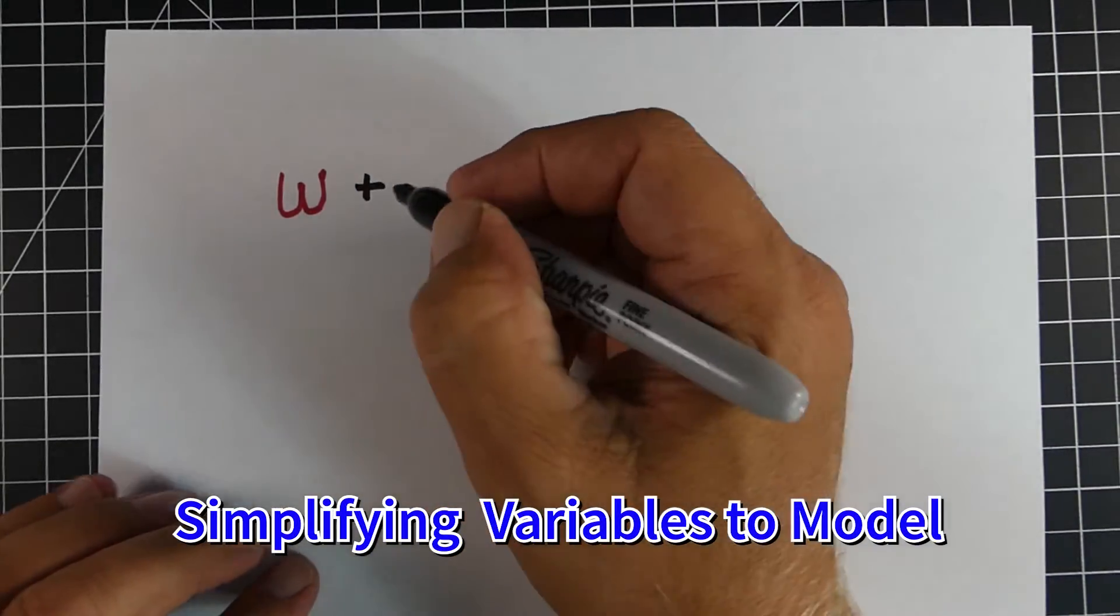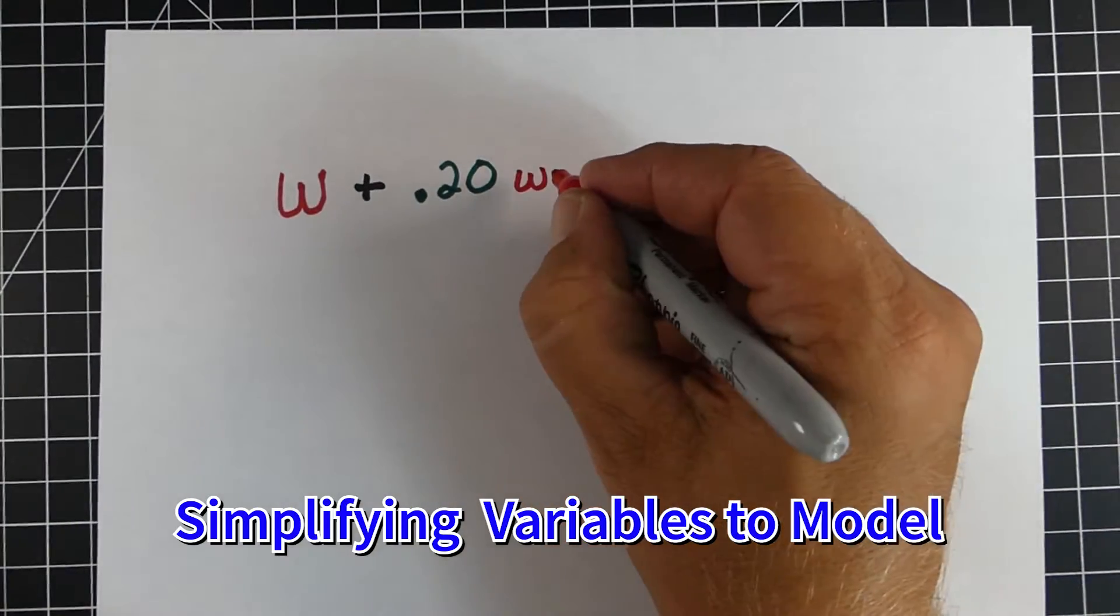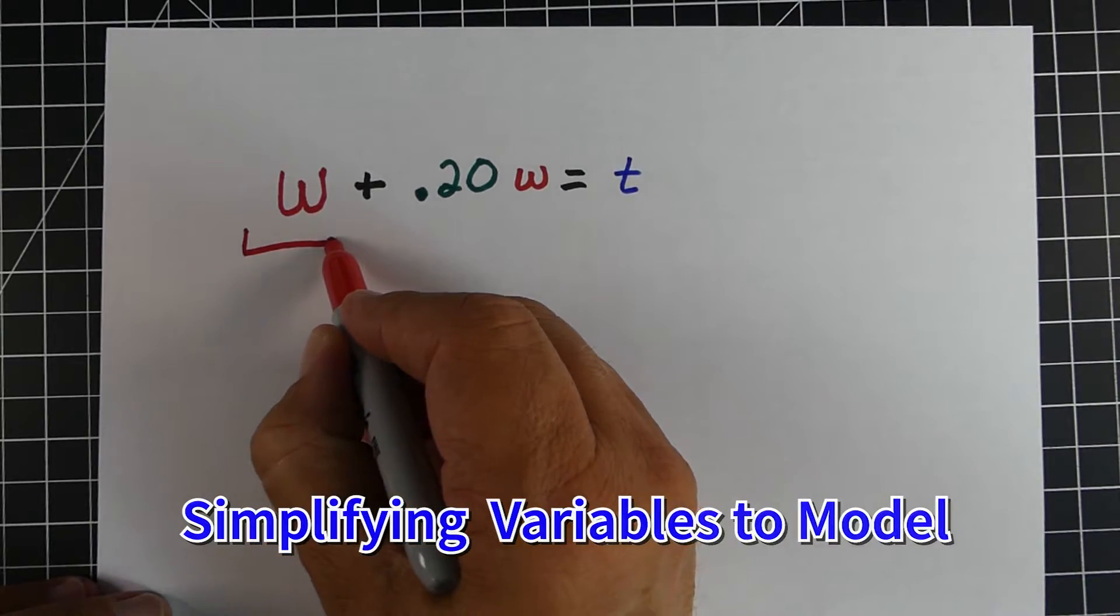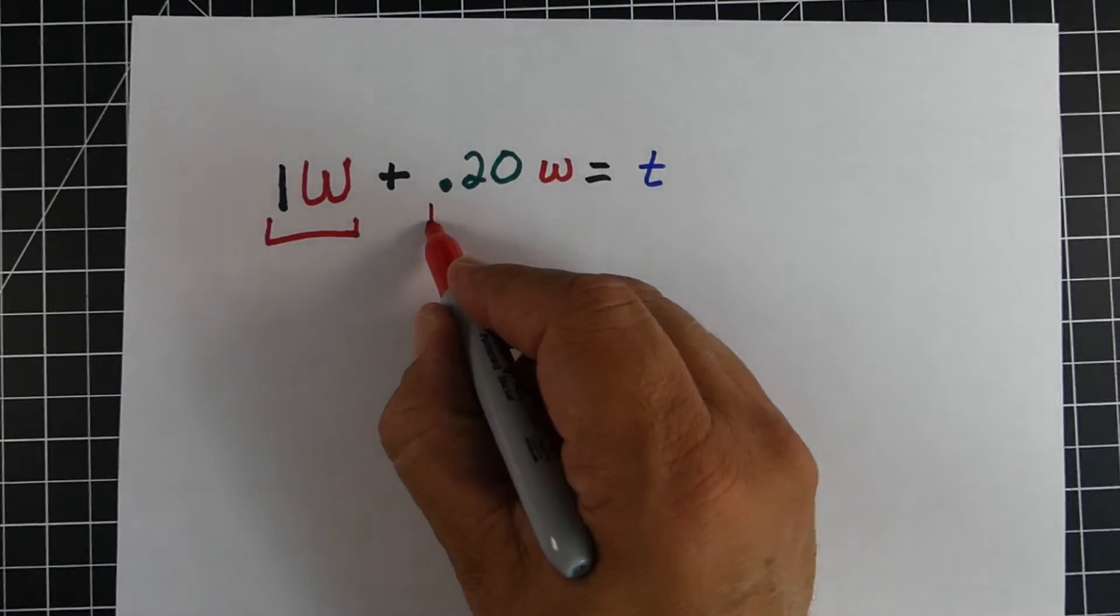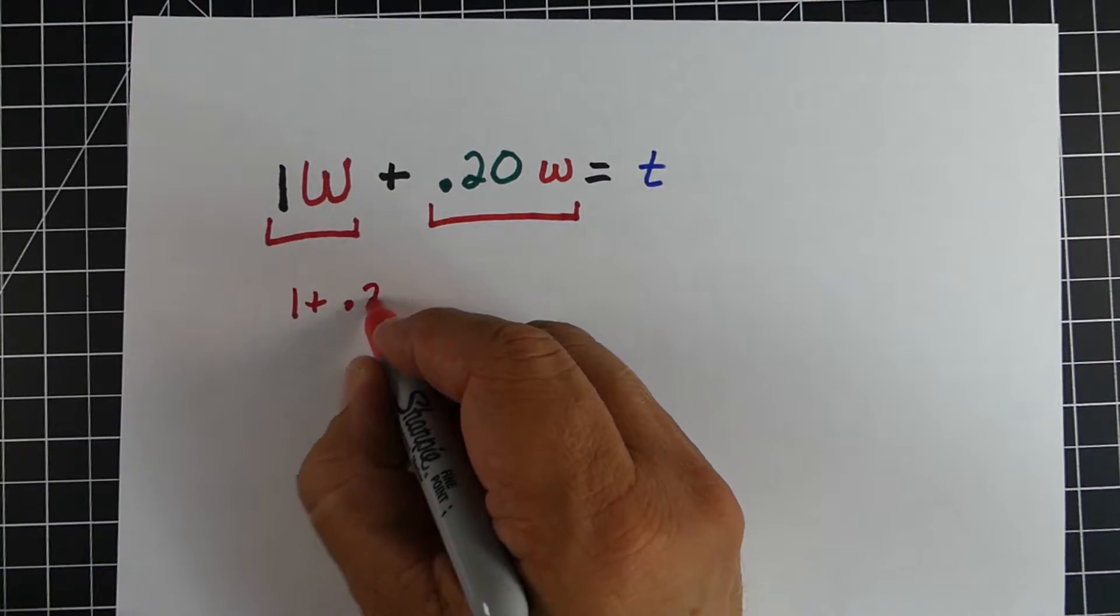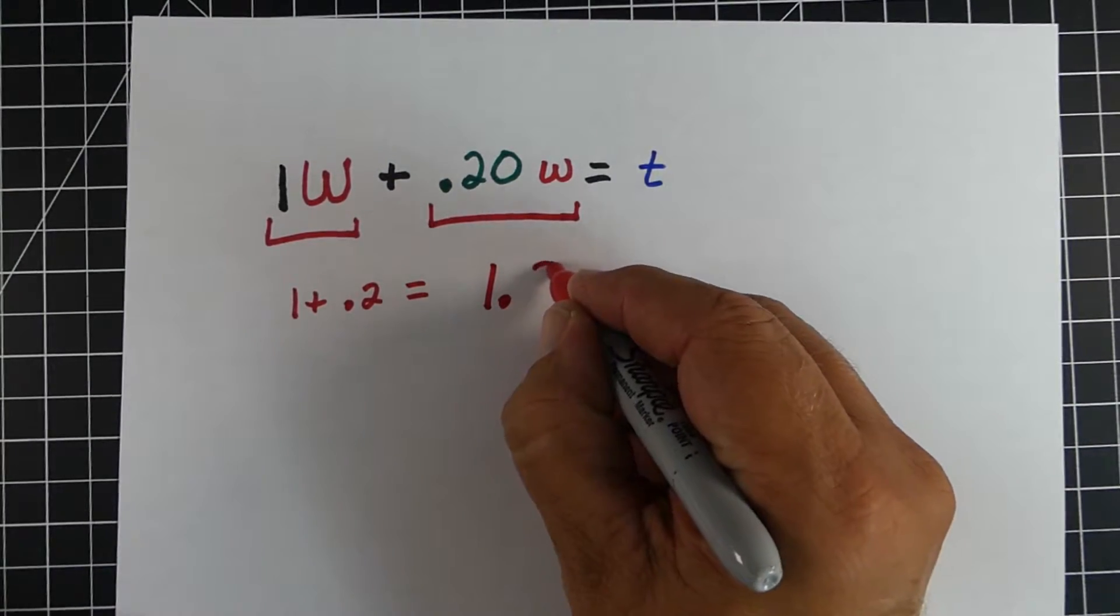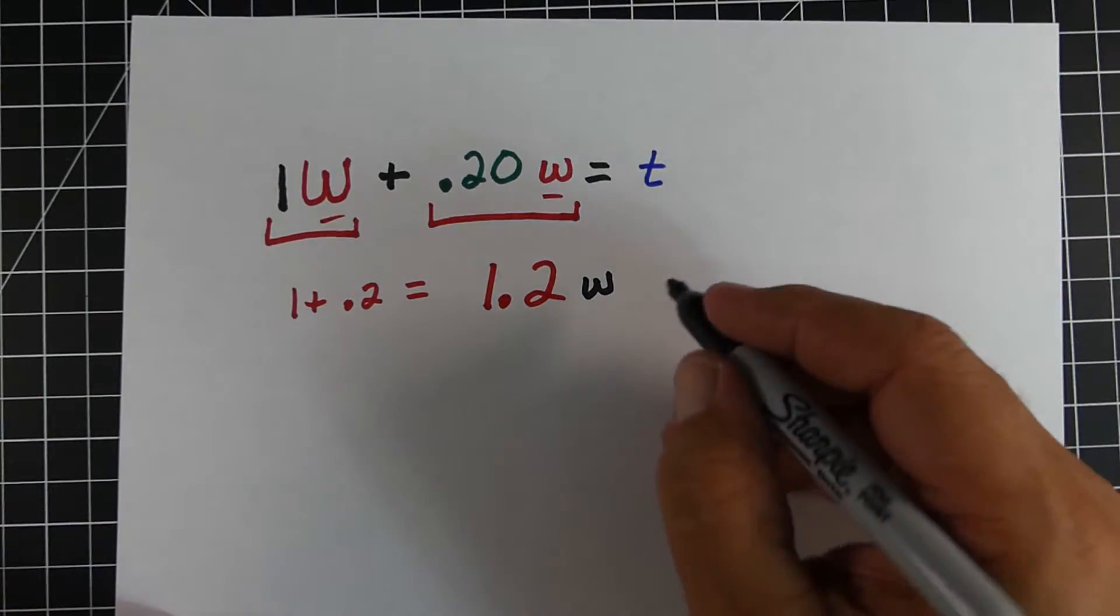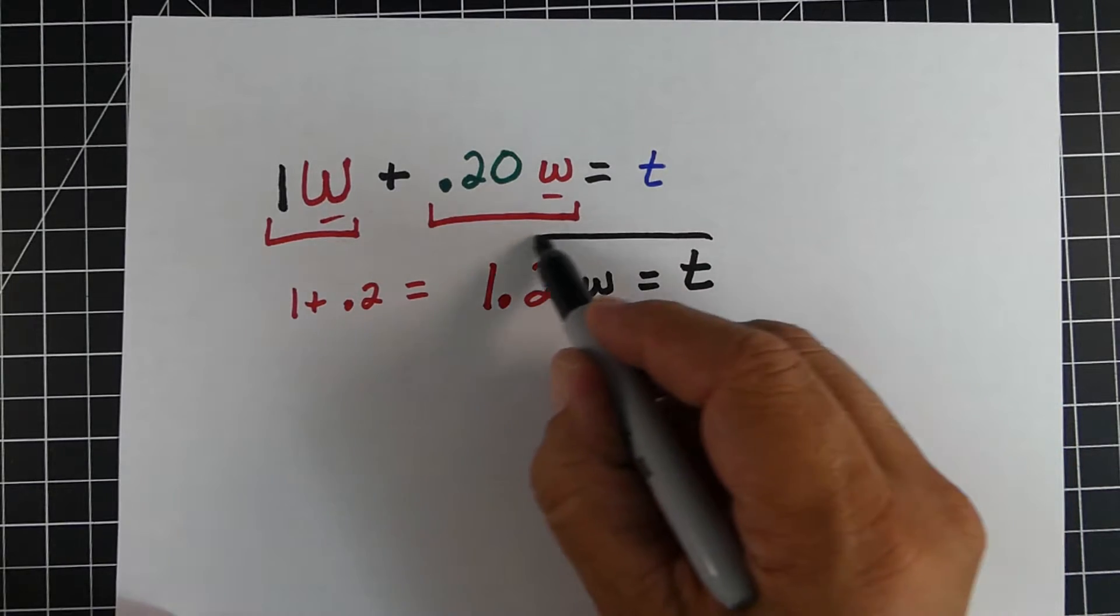Again, you can think of this as a variable too. So the whole amount would be like a w or a 1w. And the amount of tax was 20% or .2w. So if we combined these two w's, like we combine our common variable, we would take the 1 plus the .2 and we get 1.2w. And that's going to equal our total. So 1.2w equals t. And so that's how we could kind of set this up as an equation.